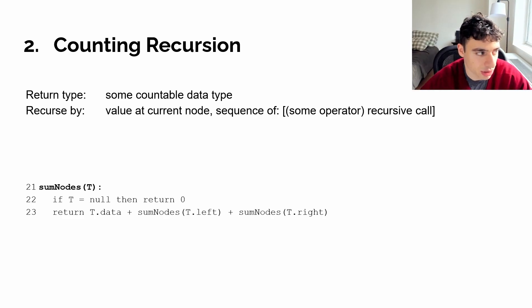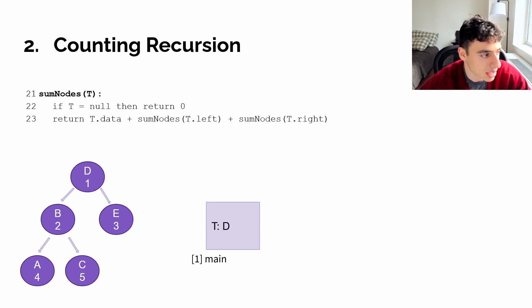This is a great application for counting recursion because instead of maintaining a sum value in our constructor, we can simply return, using the counting recursion technique, a sum of recursive calls. Now, the way to visualize what this looks like is if we come back to this tree that we were using earlier, but now let's say I've added some data values to it, and we call the sum nodes from our main method.